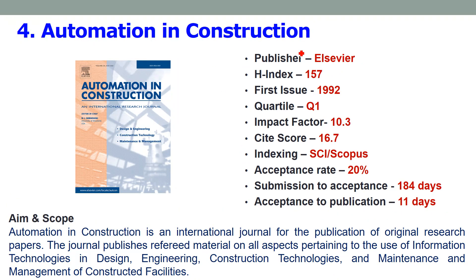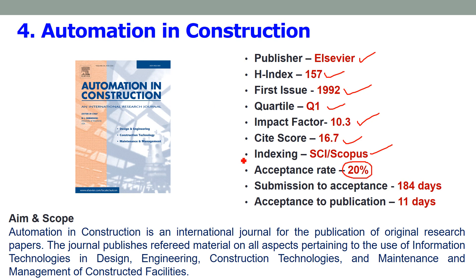Fourth is Automation in Construction, published by Elsevier with an H-index of 157. The first issue was published in 1992. It is also a Q1 quartile journal with an impact factor of 10.3 and a site score of 16.7. It is an SCI and Scopus indexed journal. The acceptance rate of the journal is 20% — meaning out of 100 submitted papers, only 20 are accepted. It has a very low acceptance rate, accepting only highly innovative and novel work. The submission-to-acceptance period is 184 days, almost 6 months.